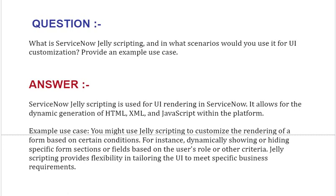Example use case: you might use JD scripting to customize the rendering of a form based on certain conditions — for instance, dynamically showing or hiding specific form sections or fields based on the user's role or other criteria. JD scripting provides flexibility in tailoring the UI to meet specific business requirements.